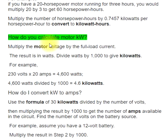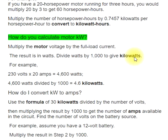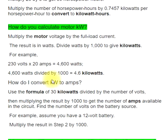How do you calculate motor kW? Multiply the motor voltage by the full load current. The result is in watts. Divide watts by 1000 to give kilowatts. For example, 230 volts by 20 amps equals 4,600 watts. 4,600 watts divided by 1000 equals 4.6 kilowatts.